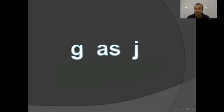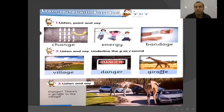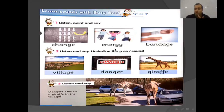A lot of words here! And this sound — G as J, like a little J. Okay, look at your book. We have some words with the J sound for G as J: change — we don't say 'change,' we say change. Energy — we pronounce the letter G like J: energy, energy. Bandage — bandage. Village — you pronounce G like J: village. Danger — danger. Giraffe — J, J — giraffe.